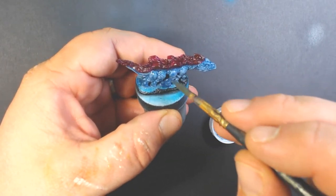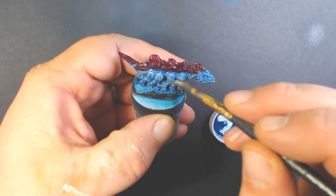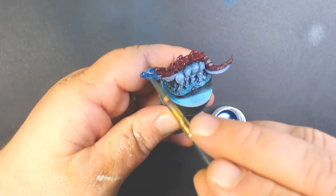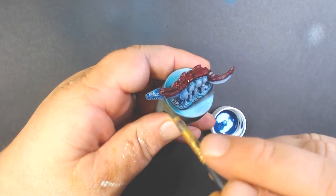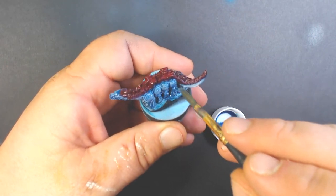The varnish helps the wash stay in the recesses and stay off of the flat areas, and of course helps protect the model.